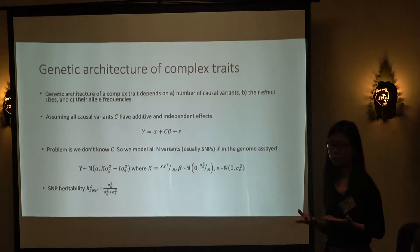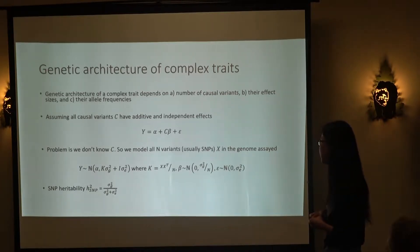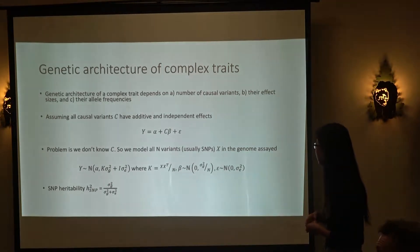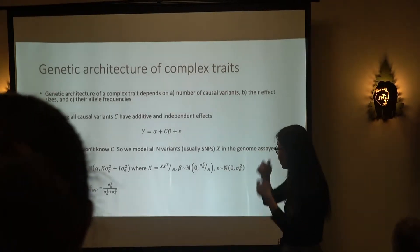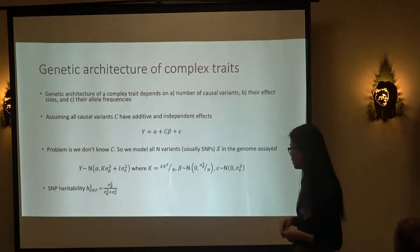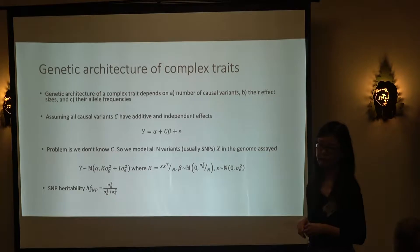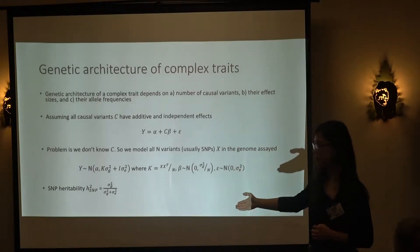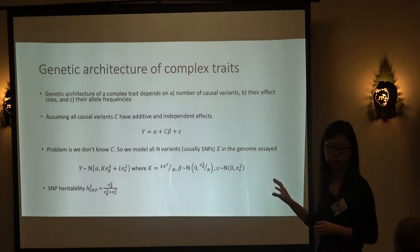The problem is that we don't know all of the causal variants. So sometimes the best we can do is to model all of the variants we observe in the genome — usually SNPs. We assume the trait y is normally distributed with a constant mean, and its variance can be decomposed into two parts: the genetic part and the environmental part. The SNP heritability is the proportion of variance attributable to the genetic part.